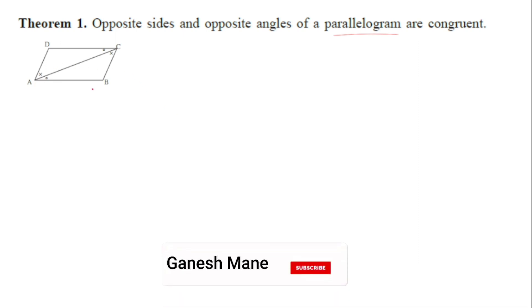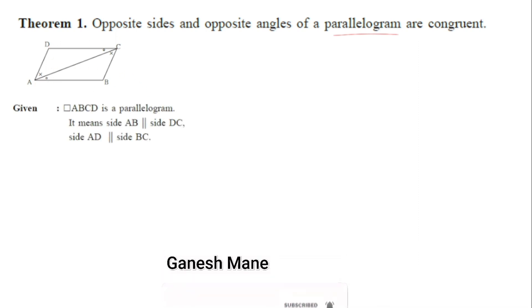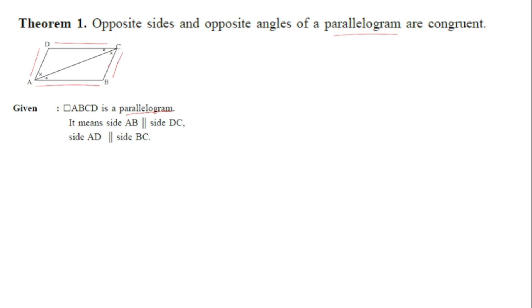Let us have a quadrilateral ABCD which is a parallelogram. Given: quadrilateral ABCD is a parallelogram, and as it is a parallelogram, its opposite sides must be parallel — that is, AB and CD are opposite sides parallel to each other, and similarly AD and BC are also parallel to each other.